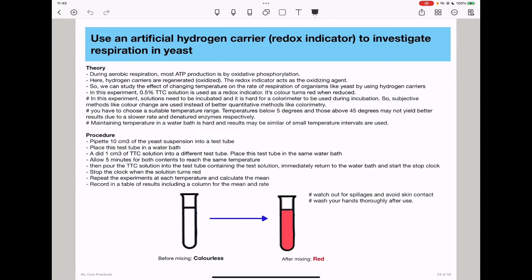So the procedure is as below. You need to pipette 10 centimeters cubed of yeast suspension into a test tube. This is going to be into each test tube, and you pipette from the stock solution.